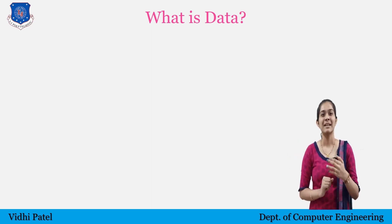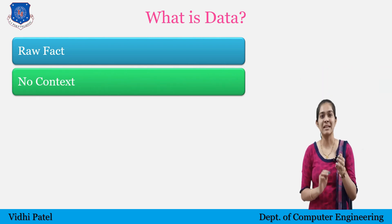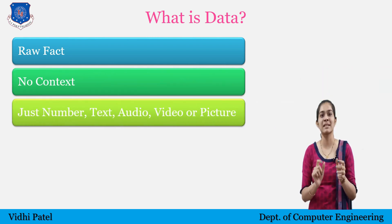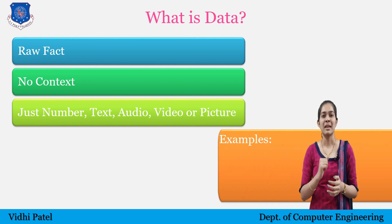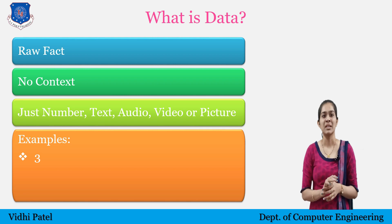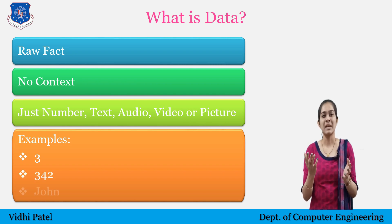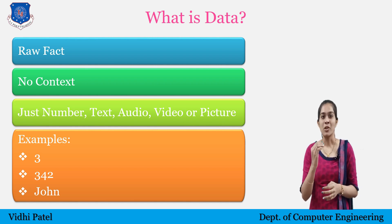What is data? Data means raw facts which do not have any meaning. It can be just a number, text, audio, video, or picture. For example, if I write '3', it is a number — nothing more than that. If I write '342', it is also a number. If I write 'John', which is a name of a person, it is also data — a raw material.